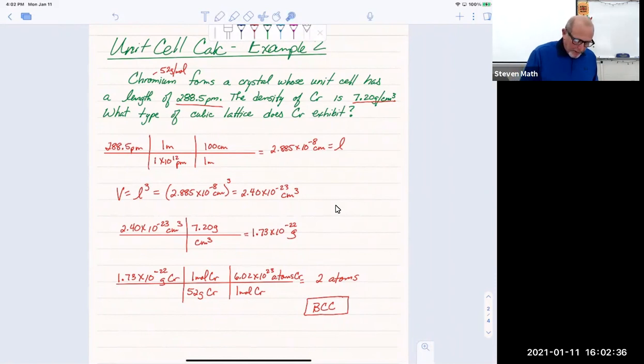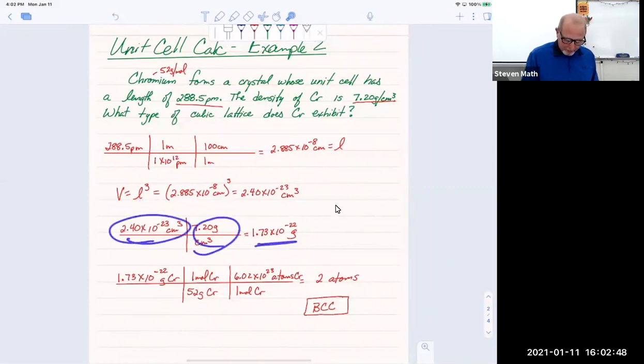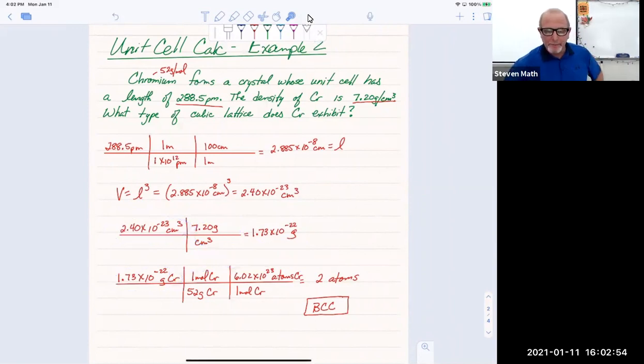But really all we did, very simple. This top part was just a unit conversion to get me to centimeters. Then length to volume, volume times density equals mass, mass to moles. It's not a very complicated problem once you break it down into the simplest of steps.